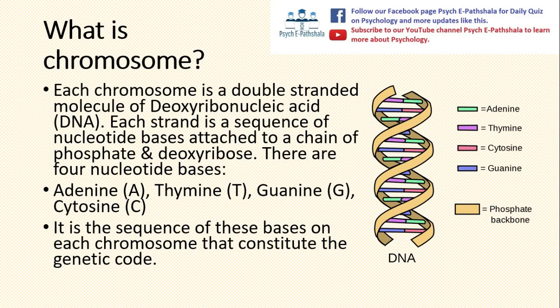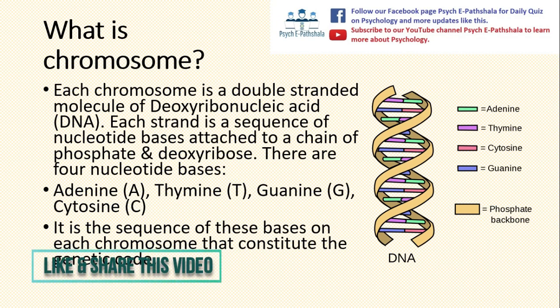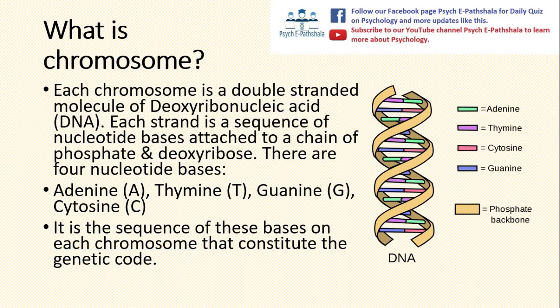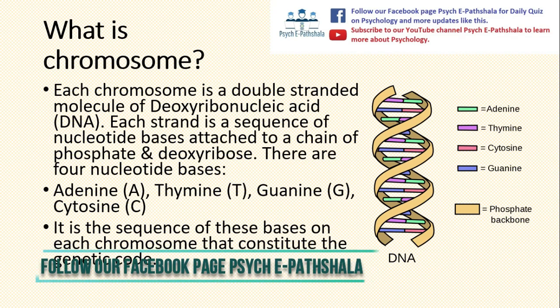Each chromosome is a double-stranded molecule of deoxyribonucleic acid, also known as DNA. Each strand is a sequence of nucleotide bases attached to a chain of phosphate and deoxyribose. There are four nucleotide bases: adenine, thymine, guanine, and cytosine. It is the sequence of these bases on each chromosome that constitutes the genetic code, or gene.